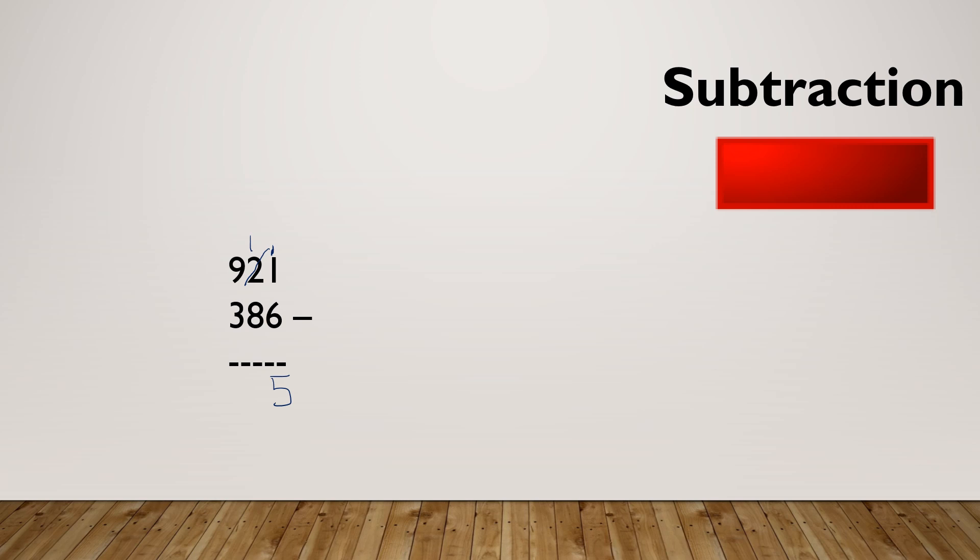Now I've got one take away eight. Can't do it. I can't take eight away from one, so I'm going to borrow from the nine. I'm going to cross that out and make it an eight. I'm going to give the one here. So I've gone from 900 to 800, so I'm giving this 100. That's why it's 11 because I'm in the tens column. So this is actually 110. So 11 take away eight, I can do. Eight, nine, 10, 11. It's three. Now I've got eight take away three, which I can do. Eight take away three is five.